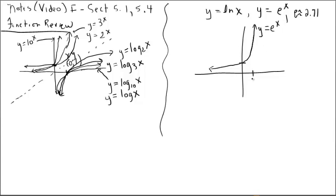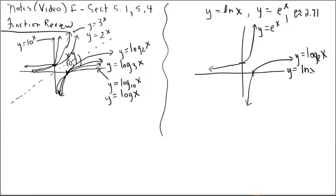If we draw the inverse of y equals e to the x, it crosses through (1, 0) and we can name it y equals log base e of x. This function is so special that we give it a special name: instead of log base e of x, we call it the natural log of x. So those two names refer to the same function, just like the two equations for e to the x. We have the natural log and the natural exponential function, and that's the focus of these next videos.